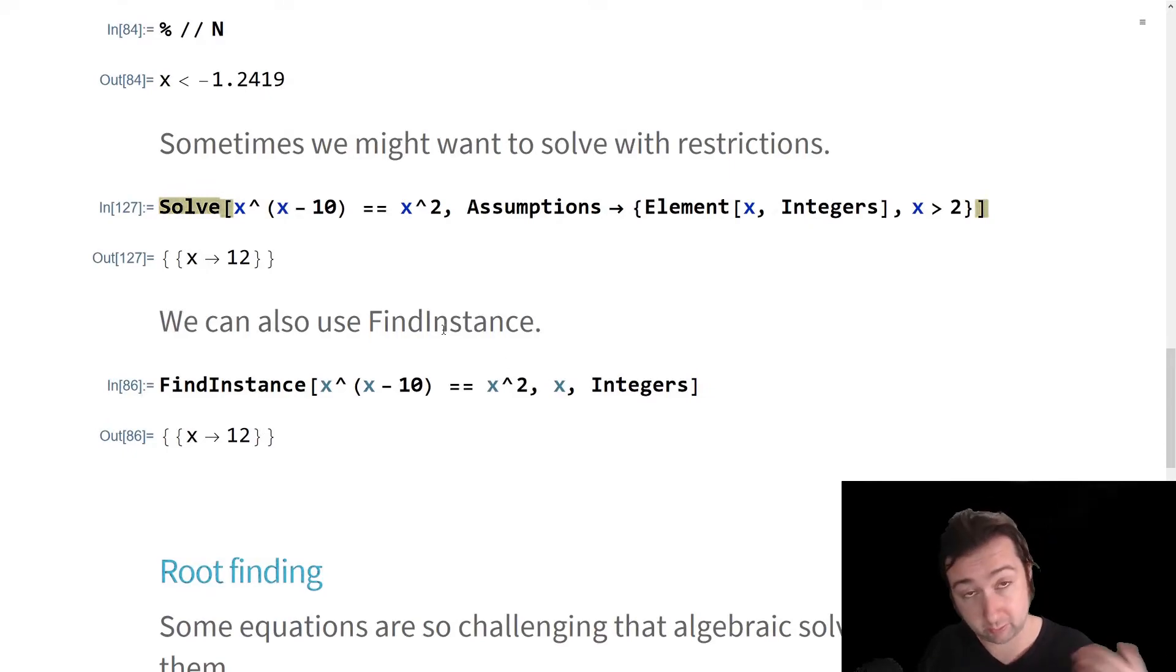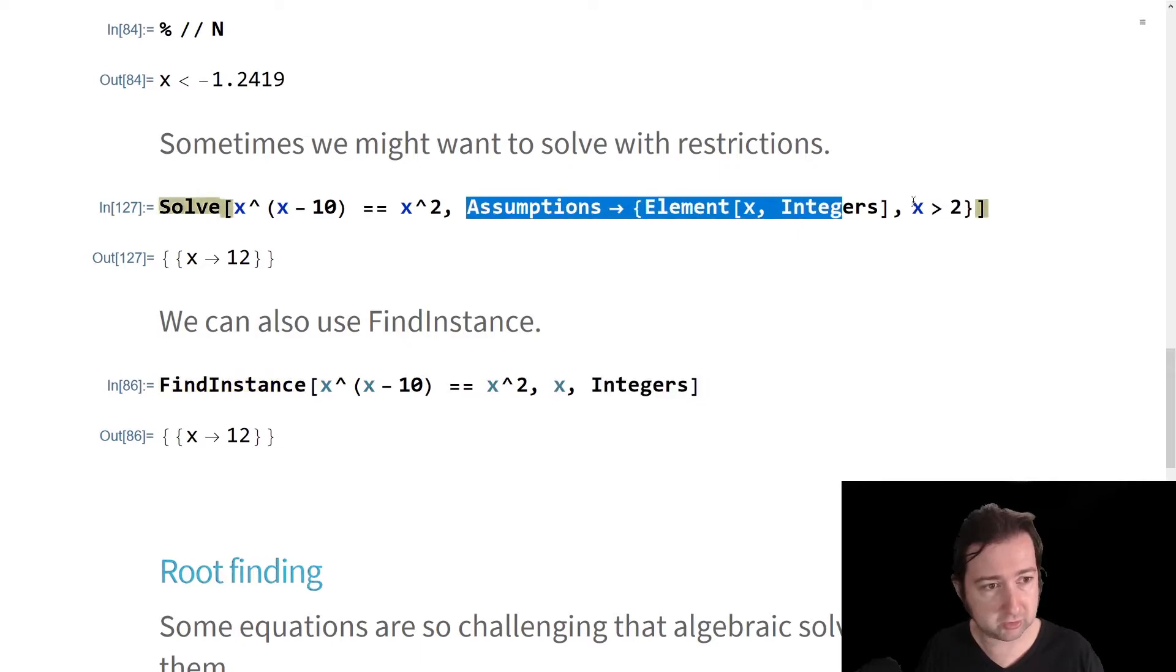If you have a certain number of assumptions that you're trying to solve for, and you only need one answer instead of trying to chase all of the answers down, you can use the command FindInstance instead. FindInstance will always produce one answer, the first answer that it finds. It also takes domain restrictions on the x without having to use the assumptions construction that we used up here.